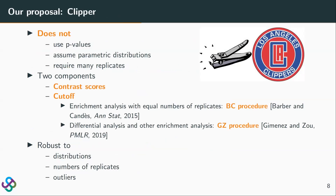Clipper is unique and different from existing approaches in that it does not use p-values, does not assume parametric distributions of data, and does not require many replicates to work. Clipper has two components: contrast scores and a cutoff on contrast scores. To find the cutoff, Clipper leverages recent advances in the statistics literature. Clipper is robust to data distributions, the number of replicates, and the existence of outliers.